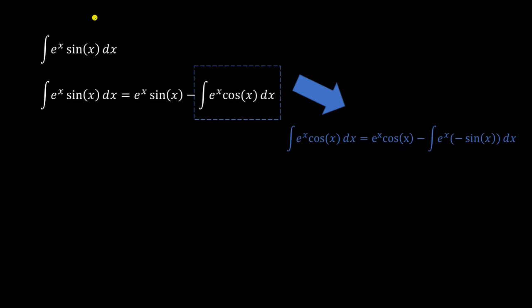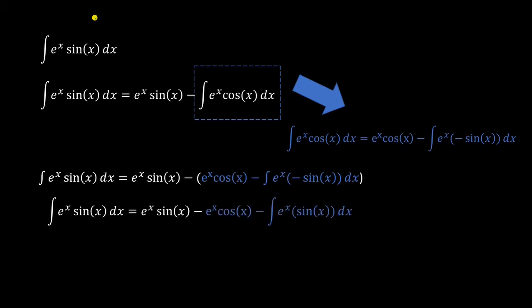Yeah, here's what you're going to do. You're going to take this blue stuff and plug it in for the integral of e to the x cosine of x. Now, simplify this by bringing the negative out of the sine of x and then distributing the negative sign in the parentheses. Notice how we have an e to the x sine of x on both sides? Well, let's solve for it like we're solving for a variable. Add it to both sides and then divide by the two.